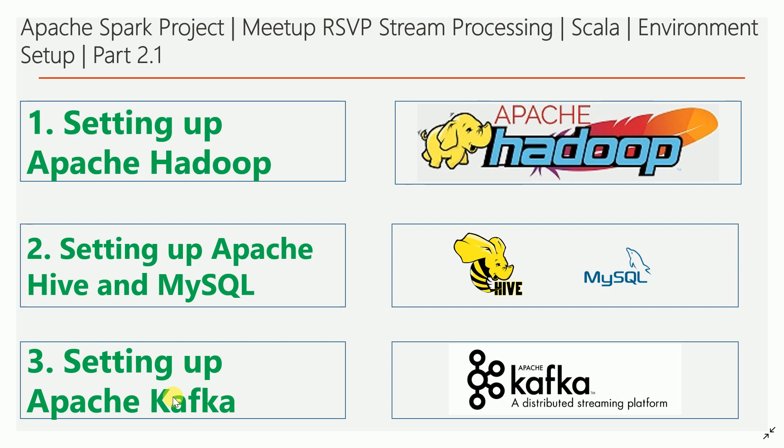In the last video we discussed about the architecture. If you have not watched that video, please watch my previous video. In this video I am going to discuss how to set up the environment for this Apache Spark project. The first thing you need to install is Apache Hadoop, because I am going to make use of HDFS for storing some data.